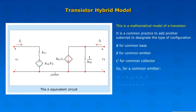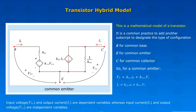So for a common emitter, input voltage VBE and output current IC are dependent variables, whereas input current IB and output voltage VCE are independent variables.